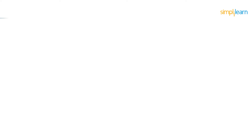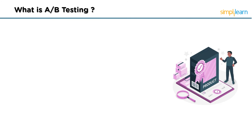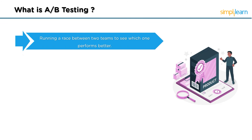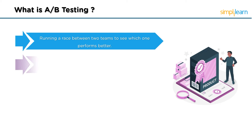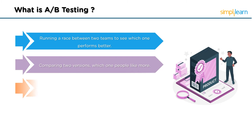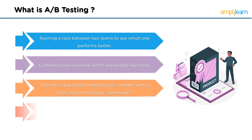A-B testing is like running a race between two teams to see which one performs better, but instead of athletes, we're comparing two versions of something to see which one people like more. Imagine you have two designs for a lemonade stand sign — one with a big bright lemon picture and another with a cool fancy font saying 'Lemonade B.' You put each sign up for a week and track how many people come to buy lemonade. If more people come when the lemon picture is up, you know that's the better choice.